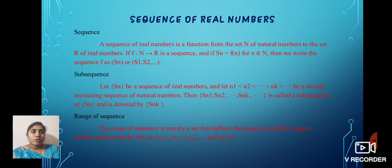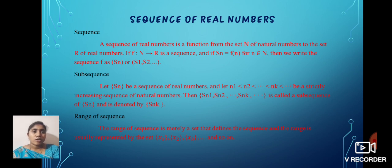Sequence of a Real Number. First, we define a sequence. A sequence of real numbers is a function from the set of natural numbers to the set of all real numbers. If function f from N to R is a sequence and if Sn equals f(n), for n belongs to N, then we write the sequence f as {Sn} or S1, S2, and so on.